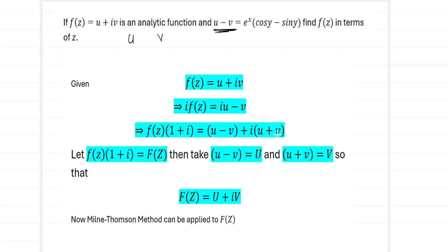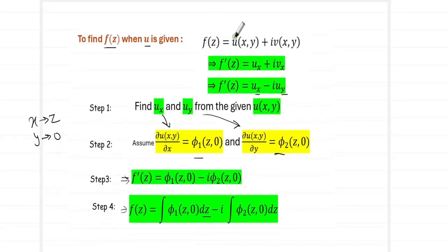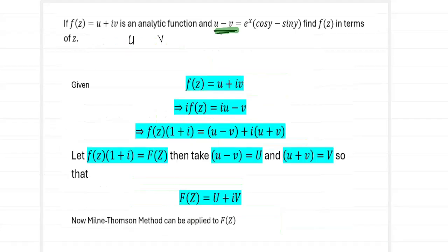We define capital F(z) = f(z)·(1 + i), capital U = u - v, and capital V = u + v, so that F(z) = U + iV. Now u - v, which is given in our question, becomes the real part of capital F(z). If u + v were given instead, that would become the imaginary part capital V of F(z). Everything we did for small f(z) can now be carried out for capital F(z).